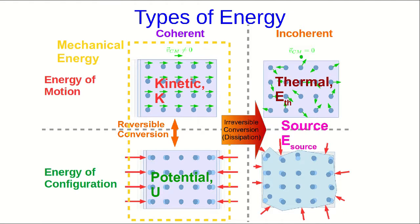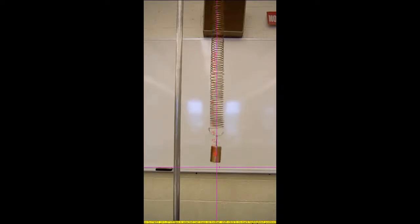The easiest way to conceive of reversible and irreversible processes is to think about what processes look like played forward or played in reverse. So for example, here's a mass oscillating up and down on a spring.